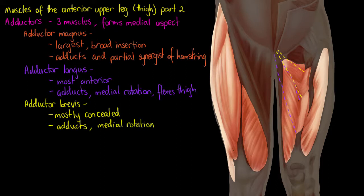For movements, we're starting to see a common pattern here: adduction and medial rotation. Medial rotation means we're rotating our leg toward the midline, so our knee will be facing toward our other leg. These three muscles make up our adductors — magnus, longus, and brevis.